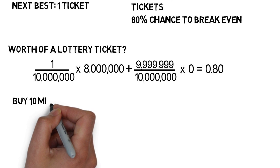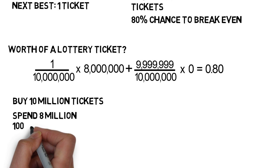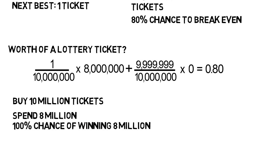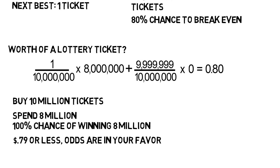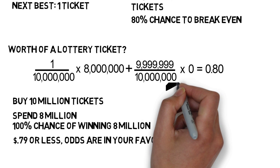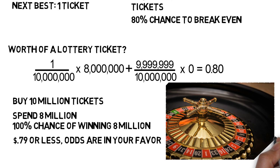If you bought 10 million tickets at 80 cents, that's 8 million dollars you spend, and you'd have a 100% chance of winning 8 million dollars — guaranteed to break even. But if it were 79 cents or less, the odds are in your favor, and the more tickets you buy, the higher your odds of winning something. Hopefully this combined with the law of large numbers reveals why the house always wins. When you gamble or play the lottery, remember they've done the math in advance.